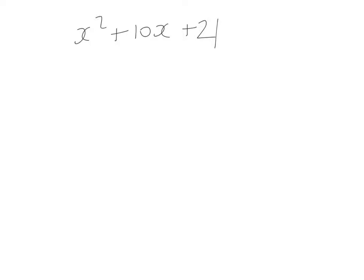N5 section 2 tutorial: trinomials. Factorize x squared plus 10x plus 21. The first thing I look for when I factorize is a common factor. There isn't one. So the next step with trinomials — these expressions with three terms — is to look for two numbers.